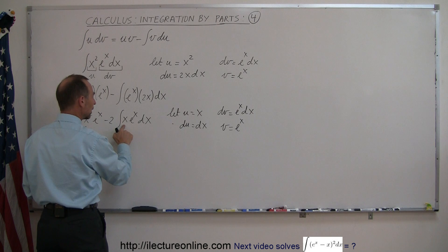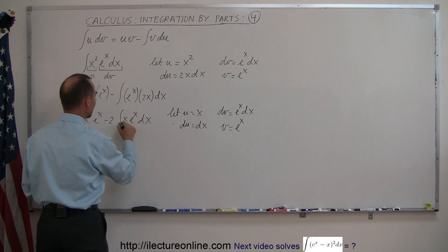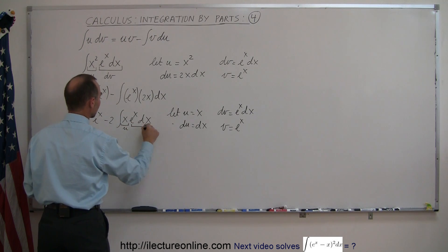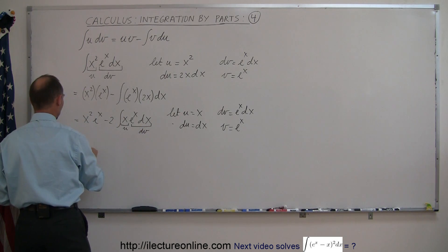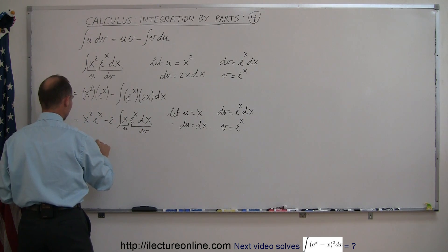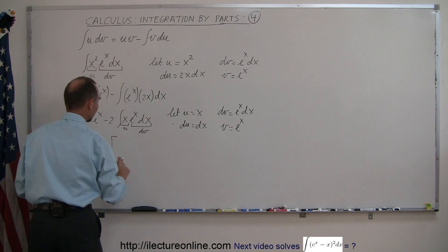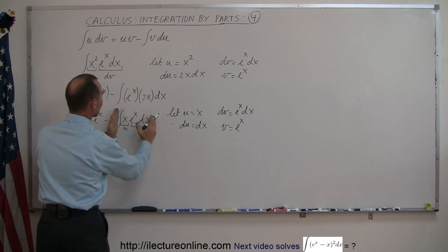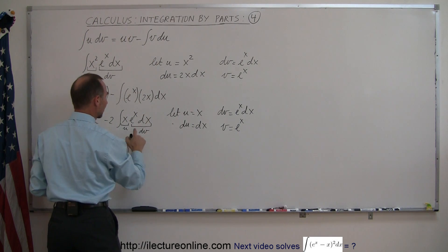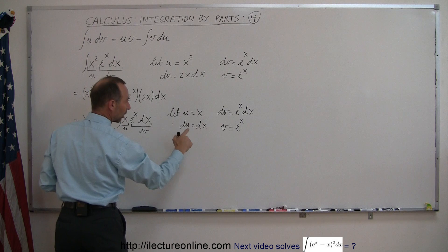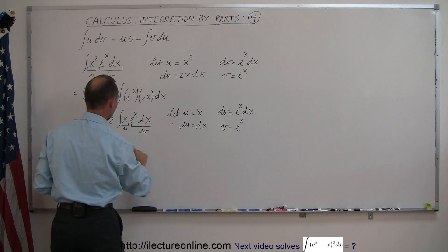So here's our u and here's our dv. And then we say this is equal to x squared e to the x minus 2 times this. And this can be rewritten using that formula: u, which is x, times v. No, u times v, which is e to the x.